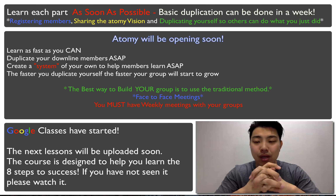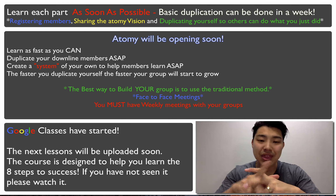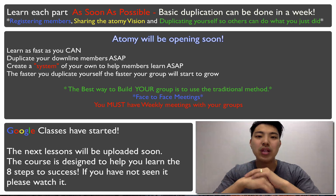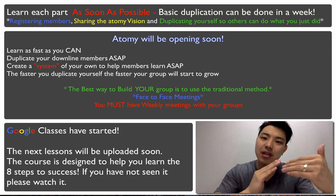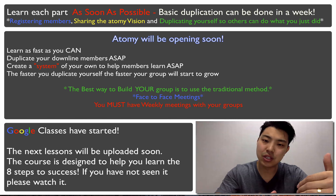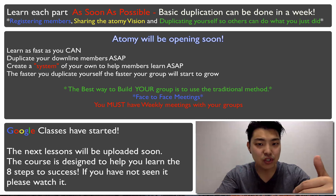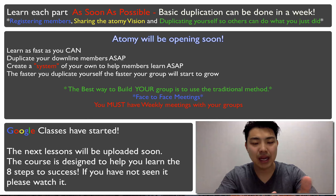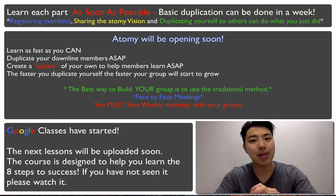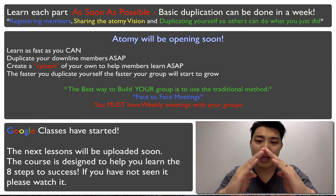I encourage you to go back to the individuals you registered in the very beginning stages. You need to revisit them, talk to them about the vision of Atomy, and get them to learn how to build their A and B line and to register even just family members first. It's always a great idea to register family and close friends first in the downline.